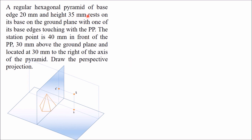The given object is a hexagonal pyramid with base edge 20 mm and height 35 mm, which is resting on its base on the ground plane with one of its base edges touching the PP. Station point is given which is 40 mm in front of the picture plane, 30 mm above the ground plane, and 30 mm to the right of the axis of the pyramid.